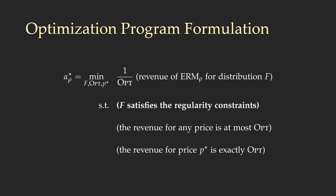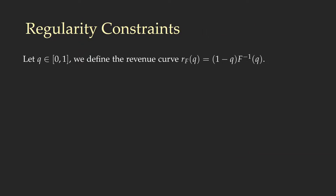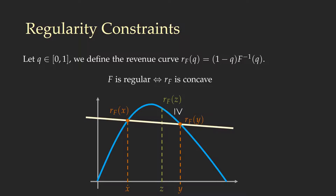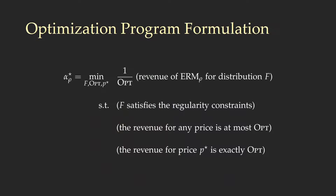As an example, I will present how to express the regularity constraints. We first define the revenue curve R_F, which takes as input a value Q in [0,1] and outputs (1 minus Q) times F-inverse(Q). The distribution F is regular if and only if the revenue curve is a concave function. To express regularity, we add the constraint that for every x, y, and z between x and y, the value of the revenue curve at z is above the line intersecting the revenue curve at x and y, as shown in this picture. Similarly, we can design the objective function and the optimality constraints.